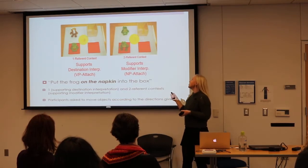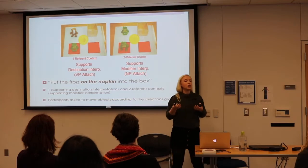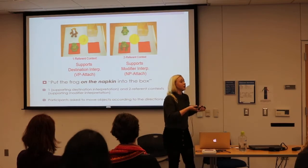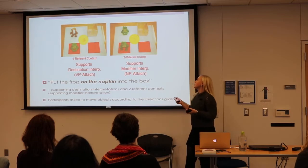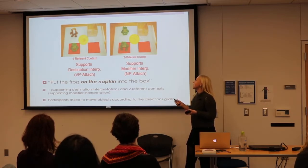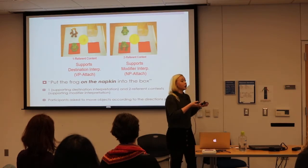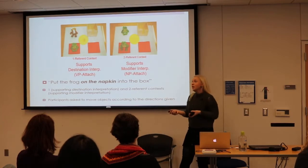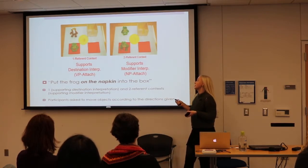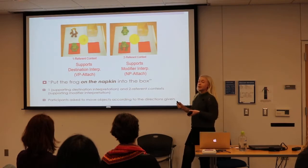In the two-referent context, adults were typically able to resolve the syntactic ambiguity. This supported the modifier interpretation because it allowed them to see two different frogs — one frog on a napkin and one frog not on a napkin. The favored interpretation was to put the frog that is on the napkin into the box.